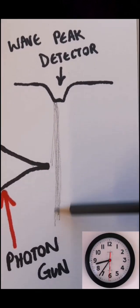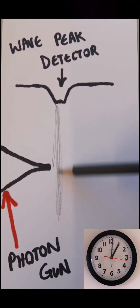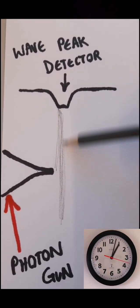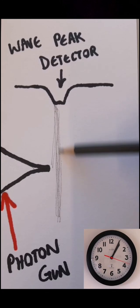A gamma ray will record time as ticking fast, a microwave will record time as ticking slow. So time does still tick and is variable at the speed of light.